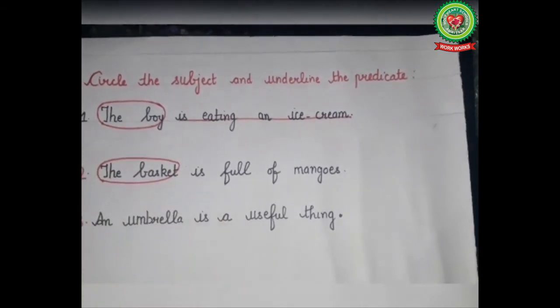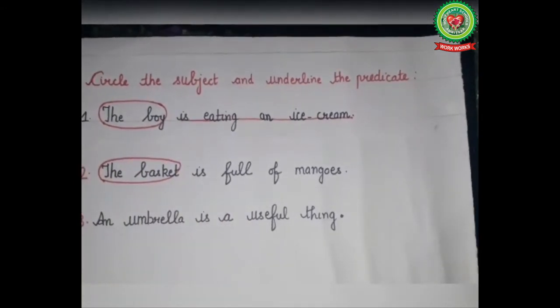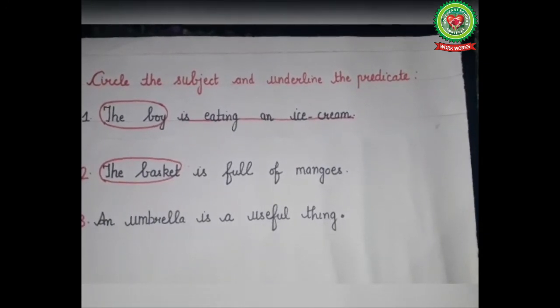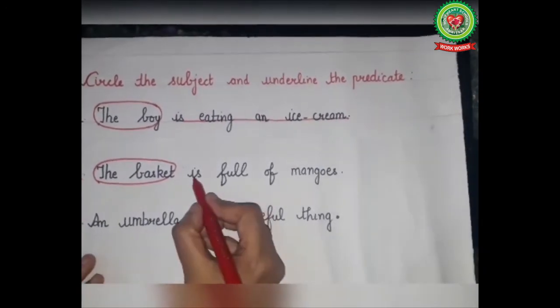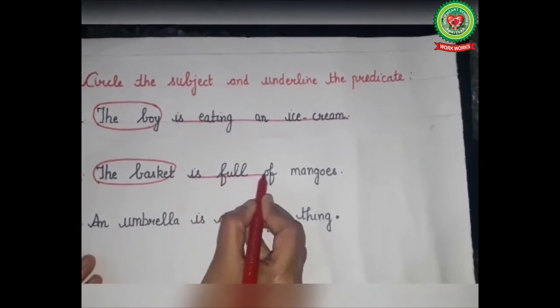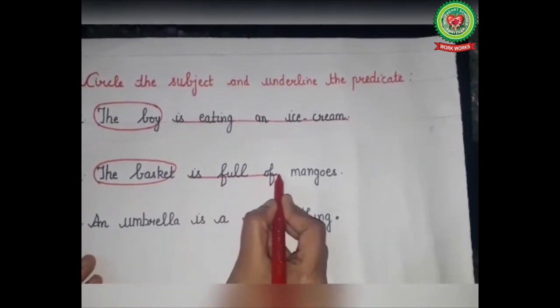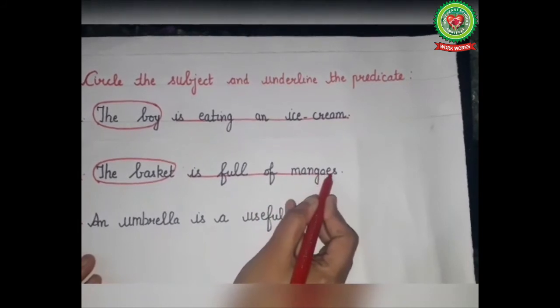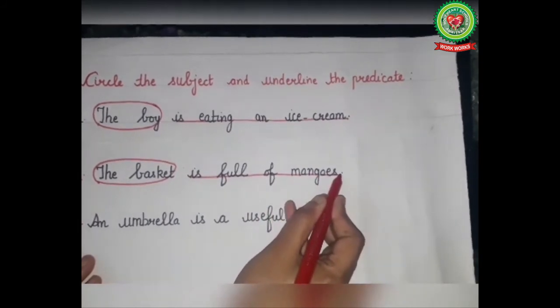What we are talking about the basket? The answer is 'is full of mangoes,' so we will underline 'is full of mangoes' as the predicate of the sentence.